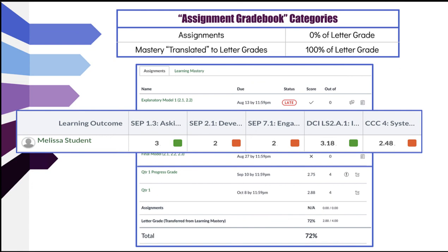You'll notice that next to the quarter one progress grade there is an exclamation point within a circle. When you hover over that in the gradebook, it will show you that grade does not count towards the final grade. What happens is the quarter one progress grade is added first, then when quarter one ends, a new score is entered — in this case a 2.88 — which encompasses all of the standards using the decaying average where the most recent score is worth more. I turn off the previous grading periods so they don't count towards the final grade, since it's already encompassed into the newer grading period.